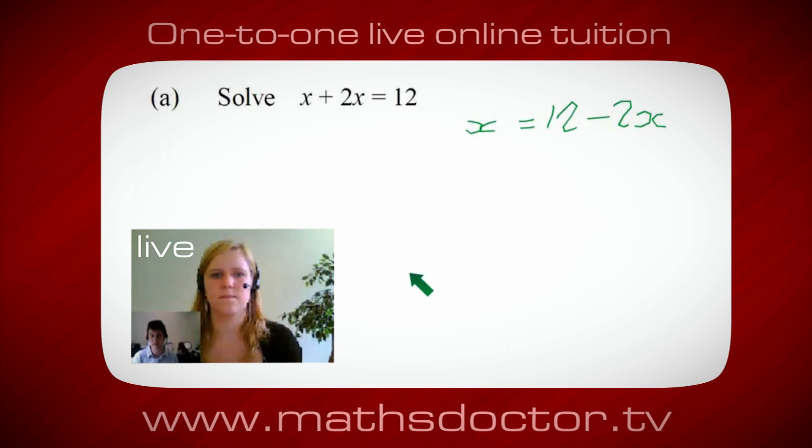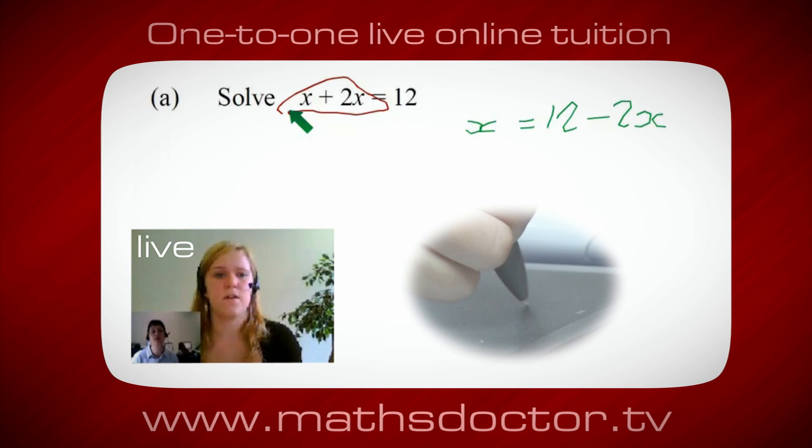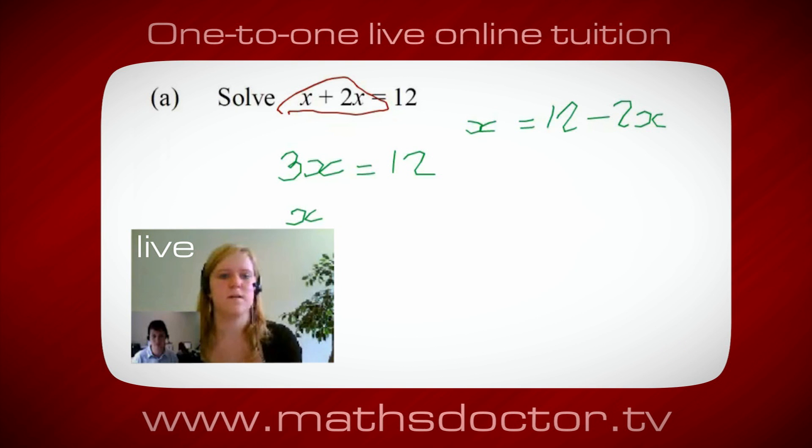OK, so a lot of the time we want to get x by itself. But what we want to do first is get all of these x's together. So can you see anything we can do with this? Get all these together in one place. Oh, OK, it's 3x, isn't it? Yeah, absolutely. So 3x equals 12. Oh, and so x equals 4. Brilliant, spot on, well done.